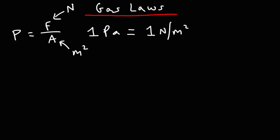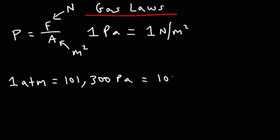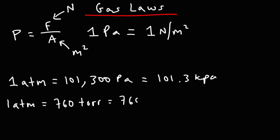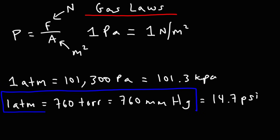In chemistry, pressure is typically in units of atm. You need to know that one atm is equal to 101,325 pascals, which is 101.3 kilopascals. One atm is also equal to 760 torr, which is also equal to 760 millimeters of mercury, and also equal to 14.7 psi (pounds per square inch). In chemistry, you'll typically be using the atm, torr, and kilopascal conversion factors.